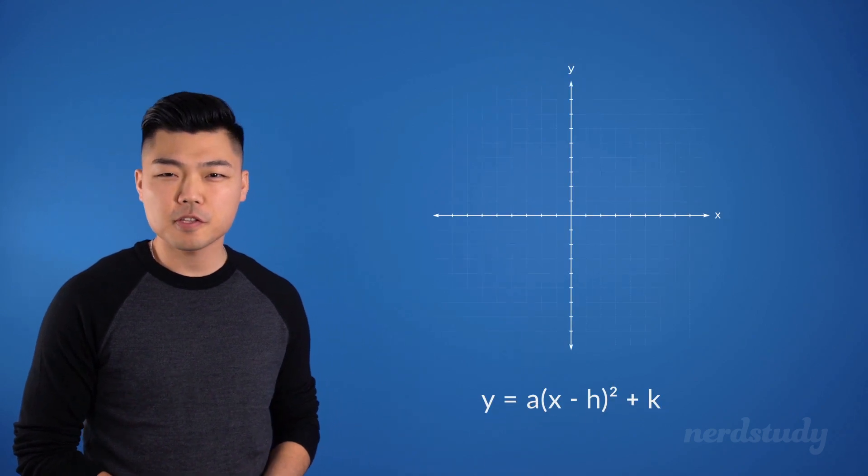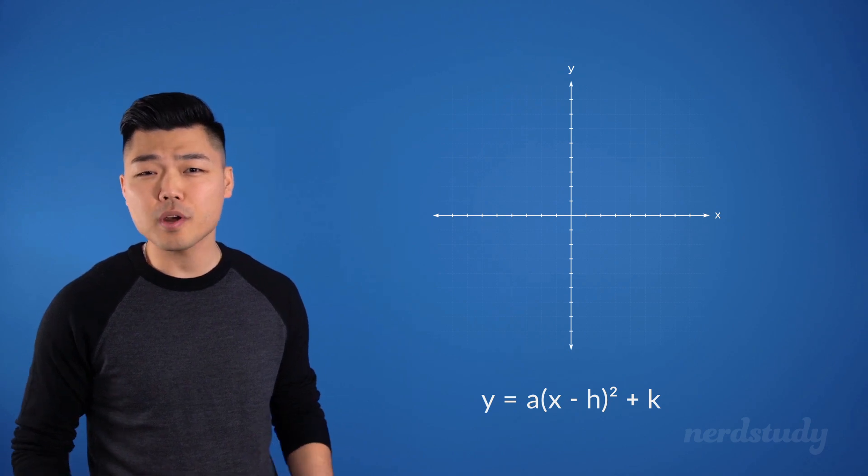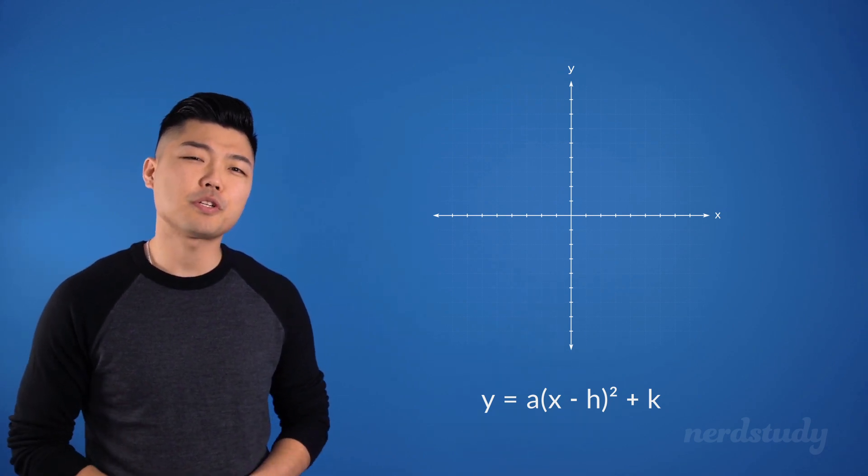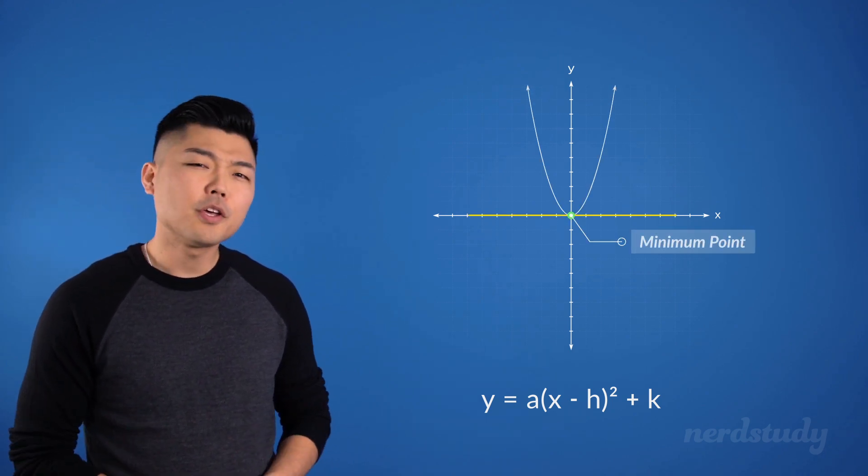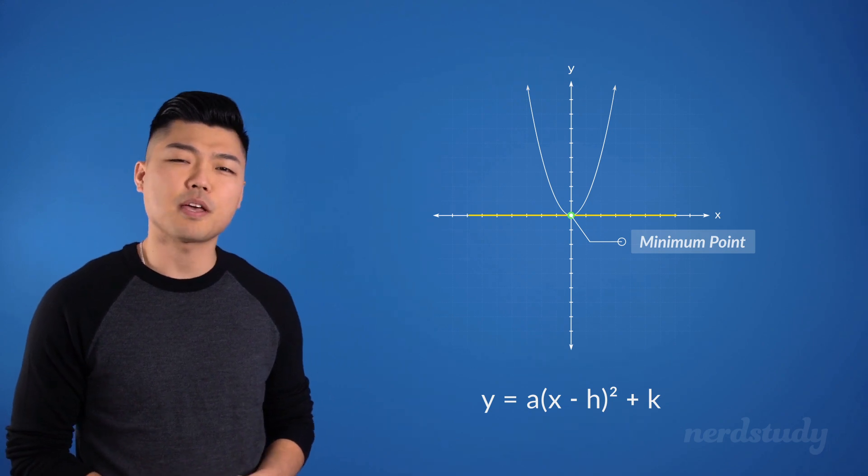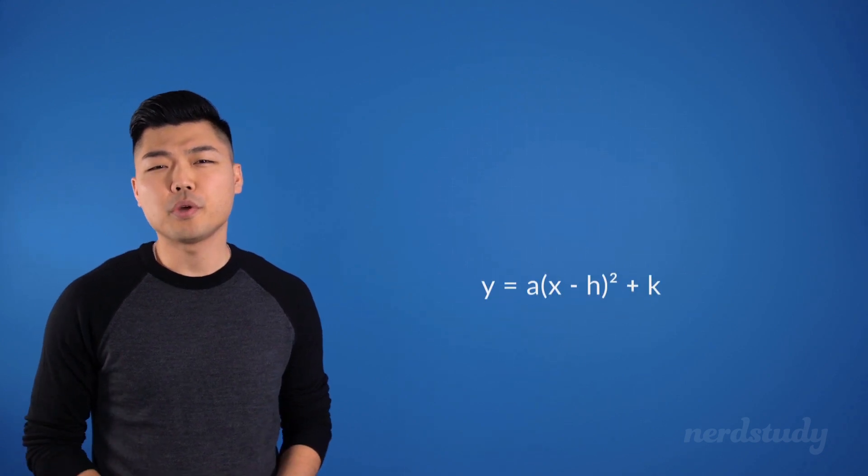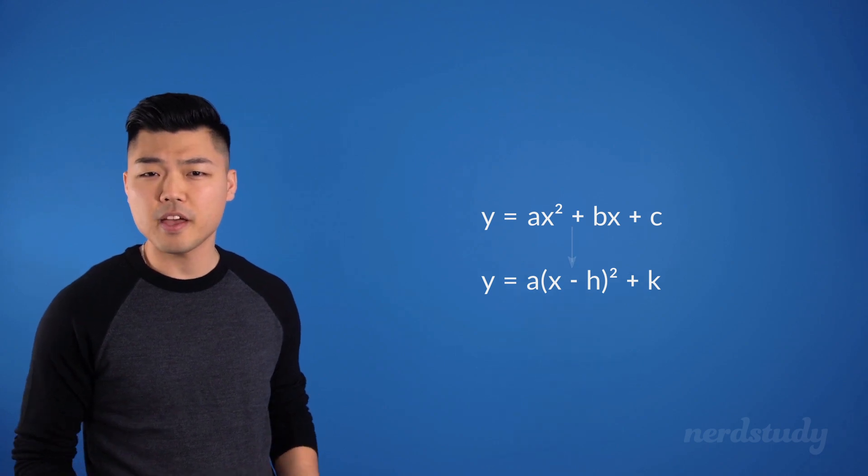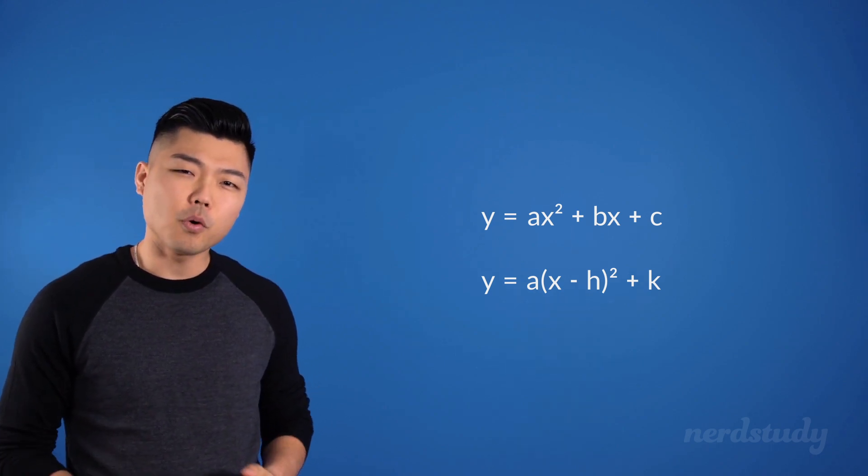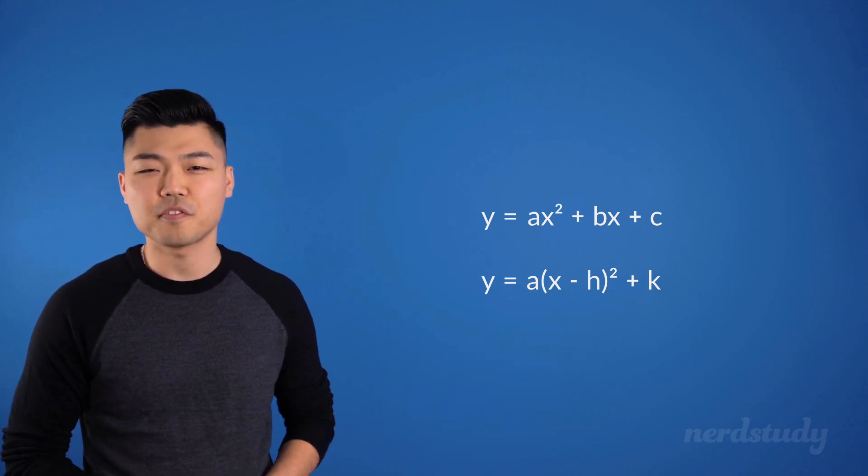So you can see immediately how useful the vertex form can be, and for that matter, how useful our knowledge of completing the square can be. A similar question might ask you for the minimum point, but in reality, you'd be doing the exact same steps to arrive upon your answer, as we did with the maximum point. We'd look to take our standard form into the vertex form properly, and then get a correct answer. The only thing we'd expect to see different is that we'd expect to see a positive a.